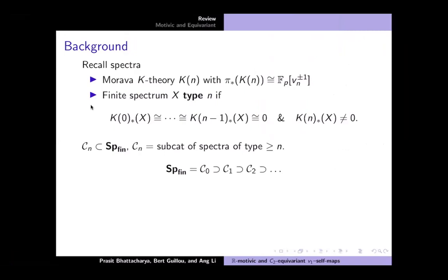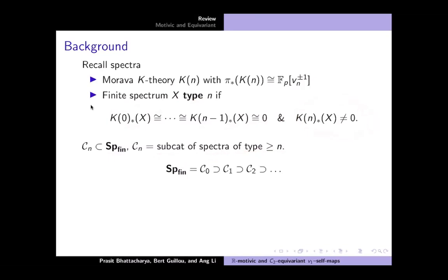I'll start with a quick review of chromatic homotopy theory. Recall that there are Morava K-theories — implicitly there's a prime fixed; today P will be two. For each N, there is a Morava K-theory with homotopy periodic under a periodicity operator V_N. This allows us to define the type of a finite spectrum: it's type N if the first Morava K-theories up through K(N-1) vanish but K(N) is non-trivial. The subcategory C_N consists of spectra of type at least N — these are the K(N-1)-acyclics — and these are nested.